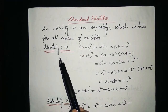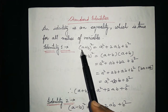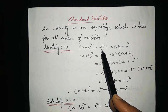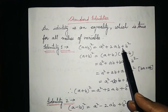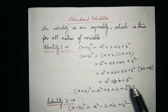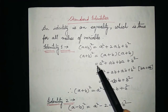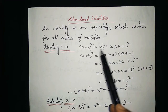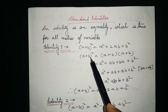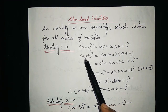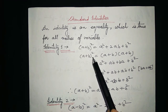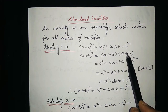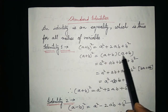Now see the first identity: a plus b whole square is equal to a squared plus 2ab plus b squared. To prove this identity, we write a plus b whole square as a plus b into a plus b.